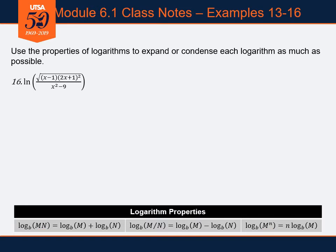Question number 16 puts it all together — we're going to need the whole slide for this one. Step by step, one rule at a time: consider the natural log of the square root of x minus one times two x plus one squared, divided by x squared minus nine. First I see there's a fraction that needs to be split, so we apply the quotient rule.